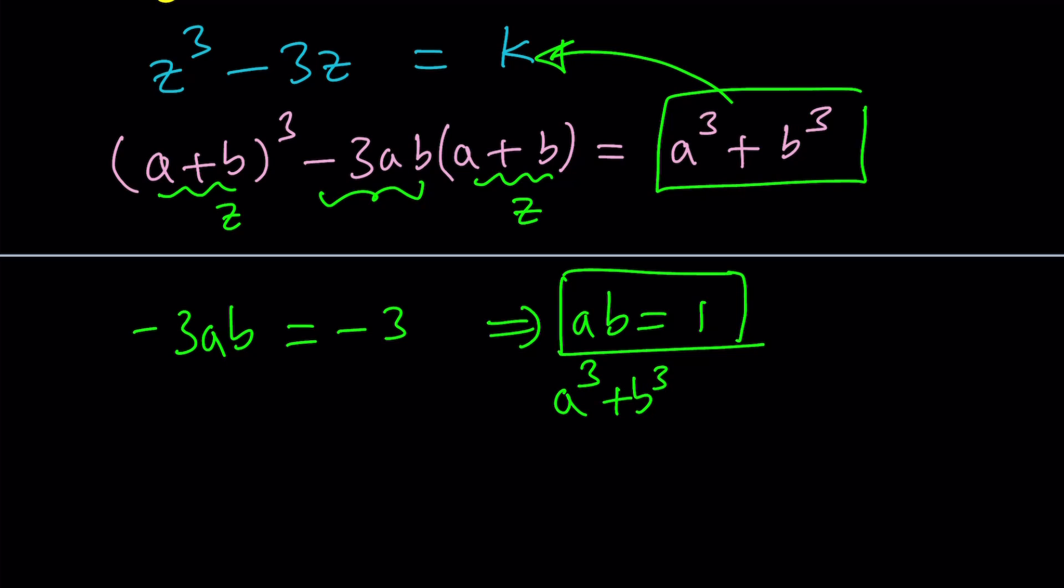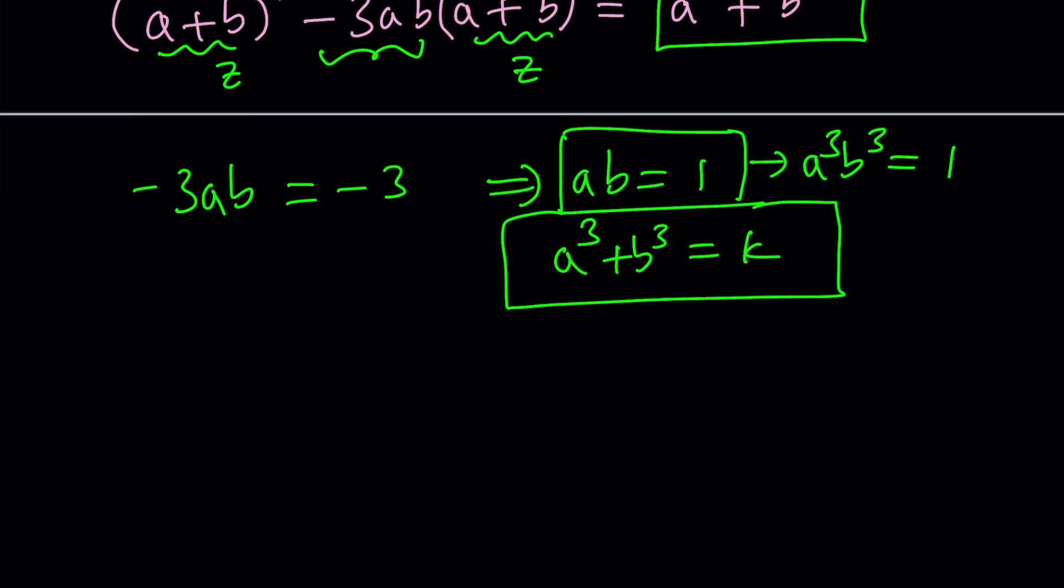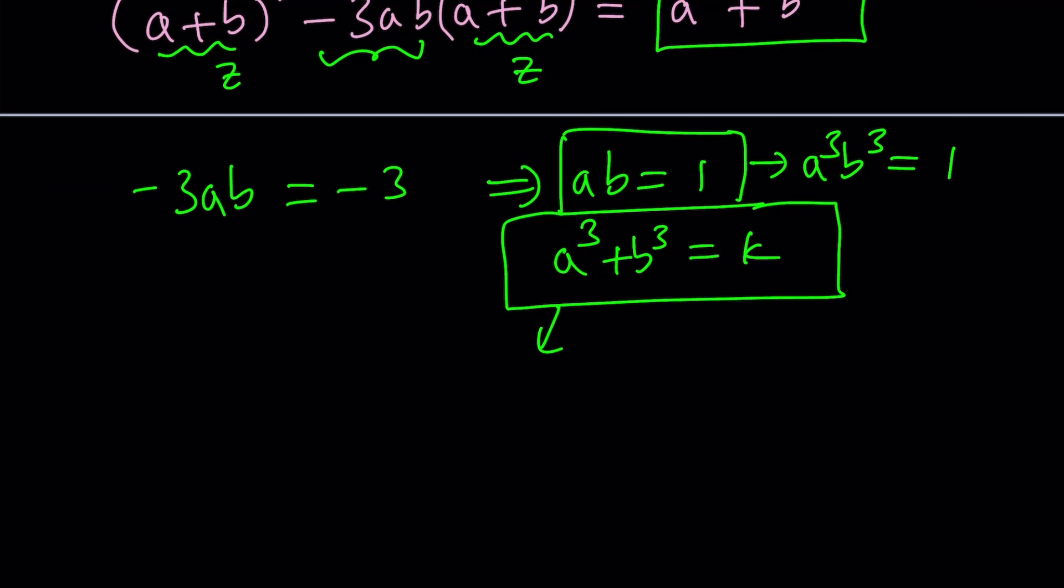Now, we've got ourselves a system of equations. Even though it looks cubic, it's actually quadratic. Let's go ahead and cube both sides here. We get a cubed, b cubed equals 1. And then from the second equation, if we isolate b cubed, we can write it as k minus a cubed. And then we could plug it in here.